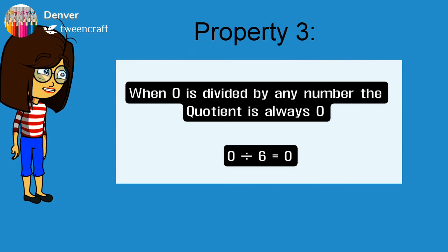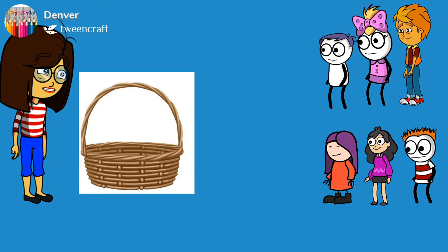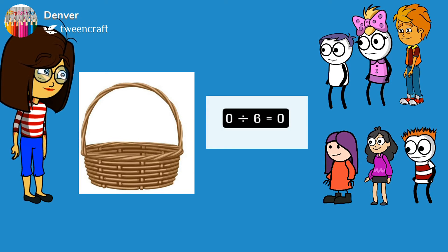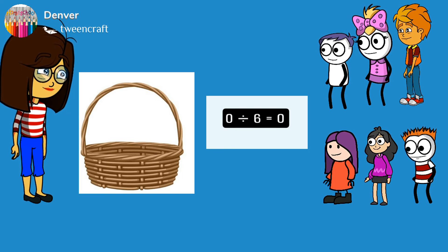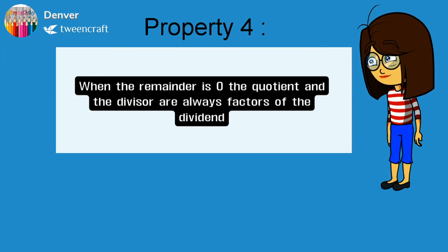Property three: when zero is divided by any number, the quotient is always zero. Here, zero divided by six equals zero. Let us take an example. There are zero oranges in the basket and six kids. How many oranges will each kid get? Each kid will get zero oranges since there are no oranges in the basket. So we can write zero divided by six equals zero.